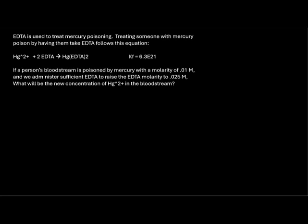This question says that EDTA is a compound used to treat mercury poisoning, and treating somebody with mercury poisoning with EDTA follows this equation. We'll have Hg2+ plus 2 EDTA yields a complex that has mercury attached to 2 EDTA molecules. We are also given a Kf value of 6.3 times 10 to the 21st power.